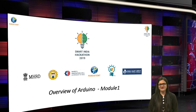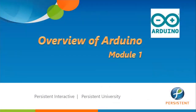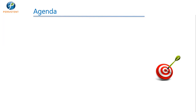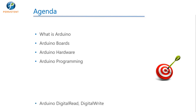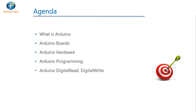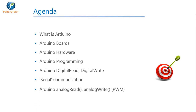Let us get started with the agenda of this first module. We will learn about what is Arduino, Arduino boards, Arduino hardware, Arduino programming in detail, digital read and digital write, serial communication, analog read, analog write, and PWM — that is pulse width modulation.